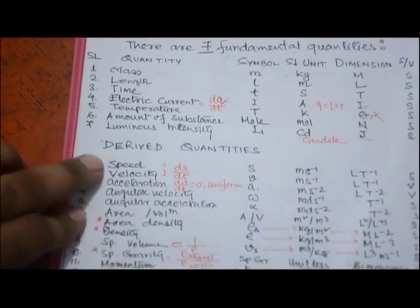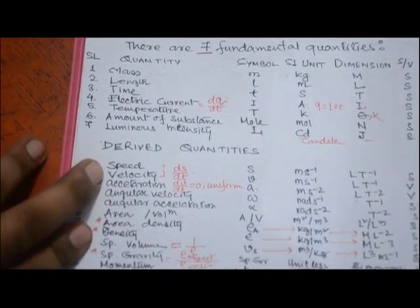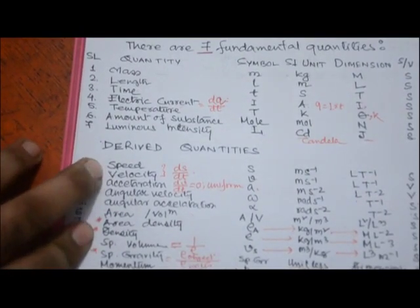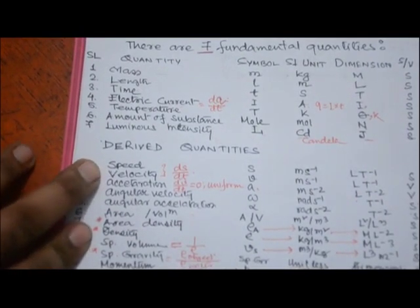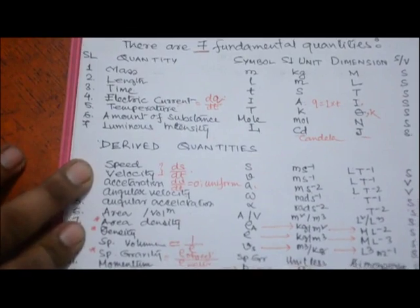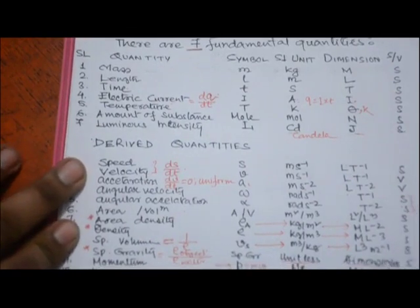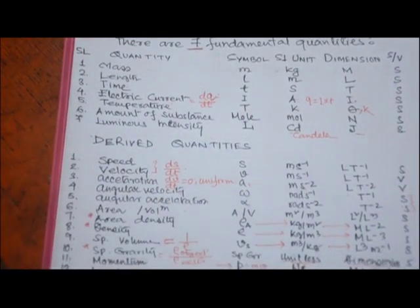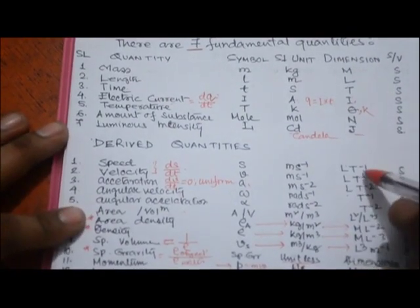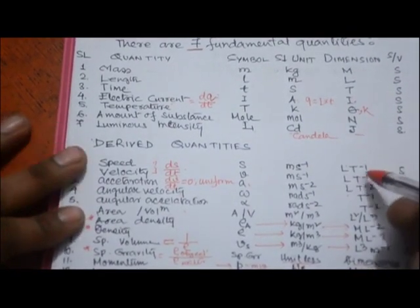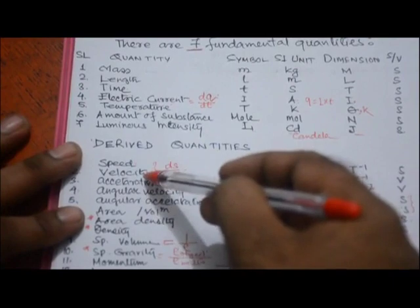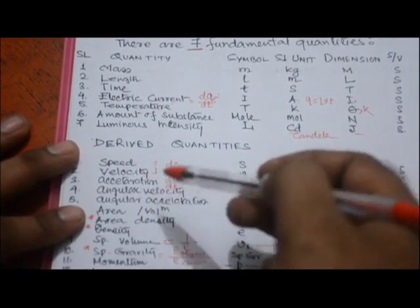Moving to derived quantities: first are speed and velocity, both defined as the rate of change of displacement. Both have the same unit — meter per second — and dimension L T⁻¹. The difference is that speed is a scalar quantity while velocity is a vector quantity.